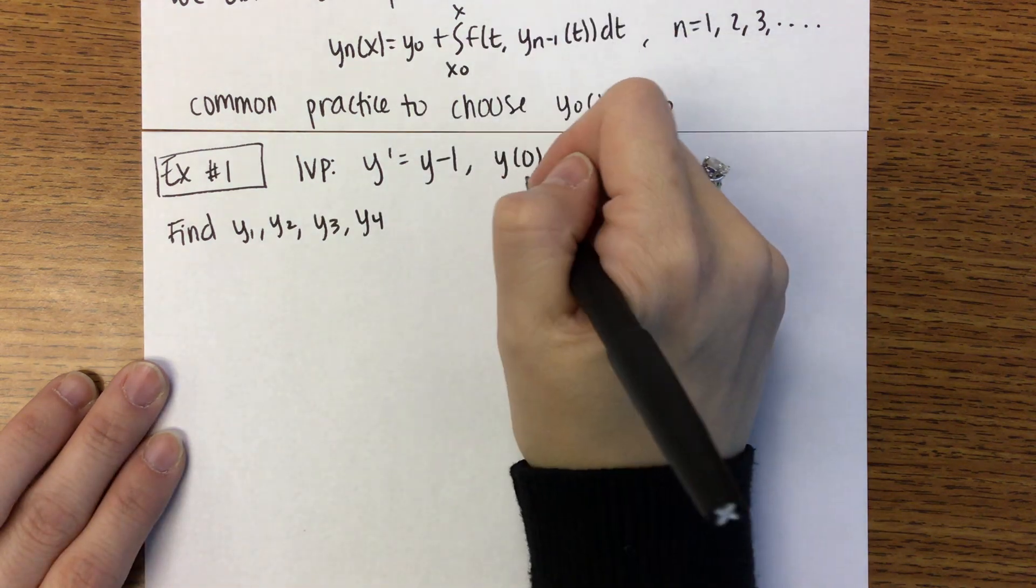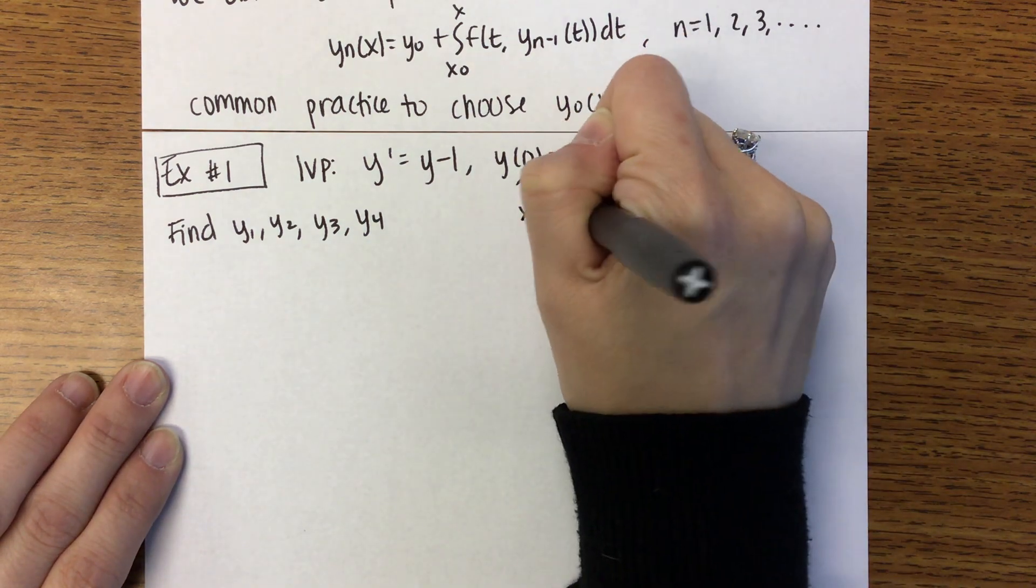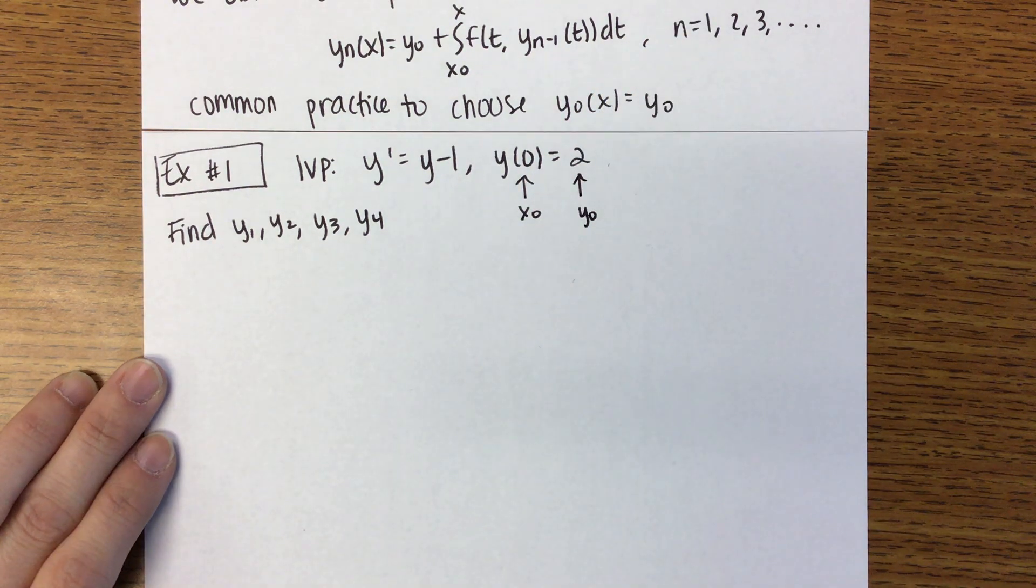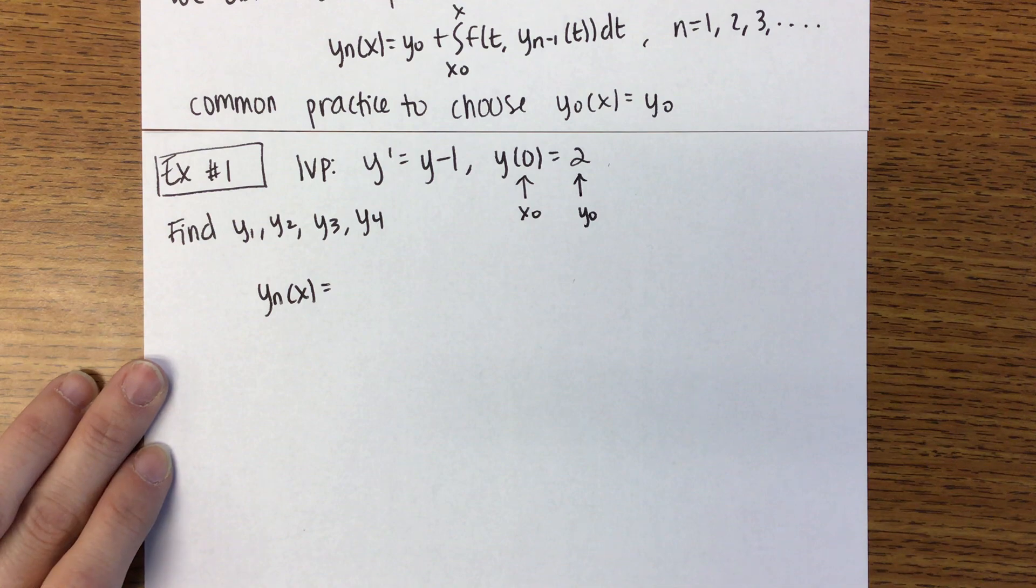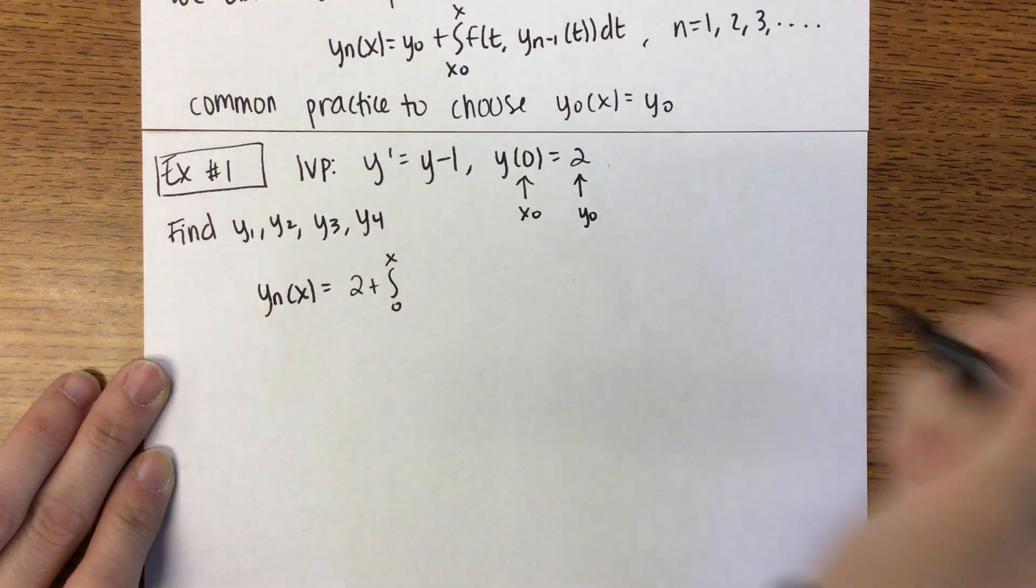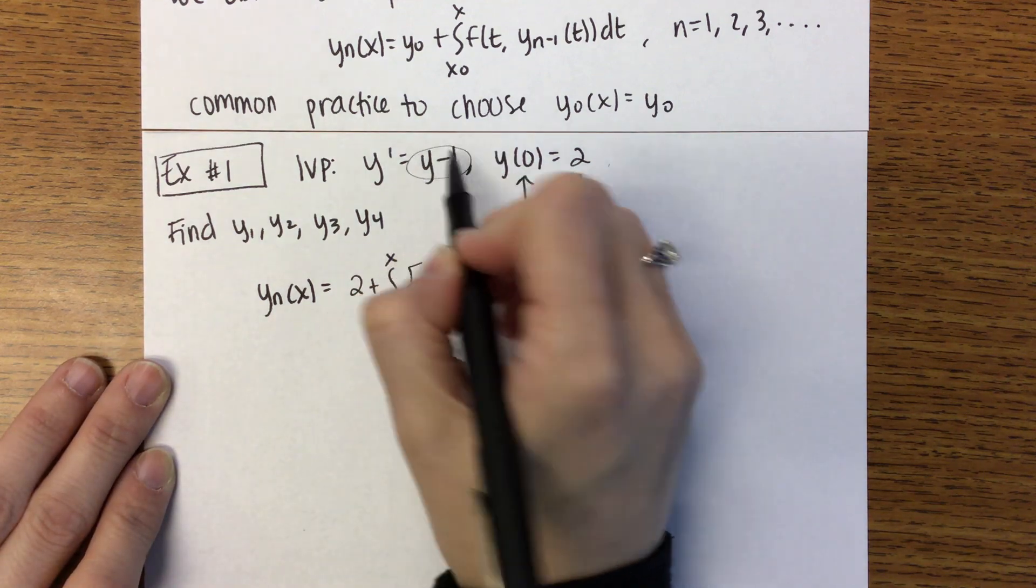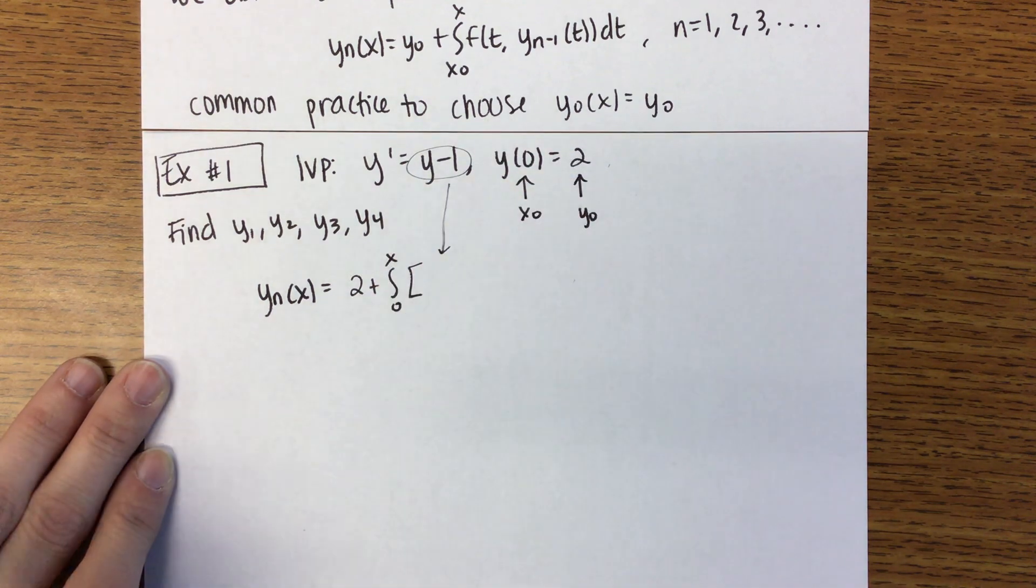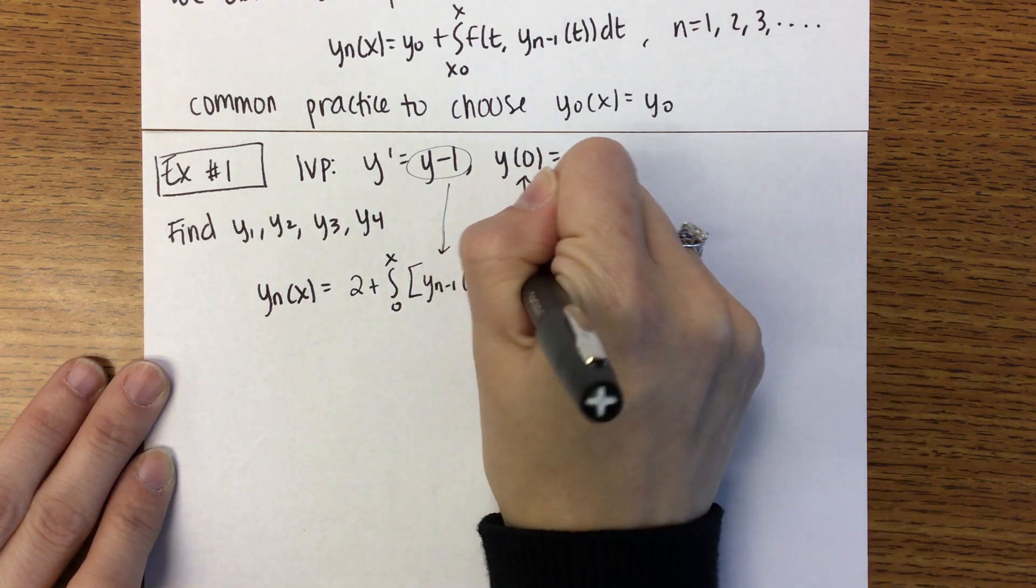Okay, with that initial condition, that 0 is X0, that 2 is Y0. So I'm going to write the general form of Yn of X and then we can use that to find each of the approximations. So that'll be Y0, which in our case is 2, plus the integral from 0 to X. So X0 to X. And then it's F of T. So this is what we're putting in. So it'll be Y of N minus 1 of T minus 1 DT.